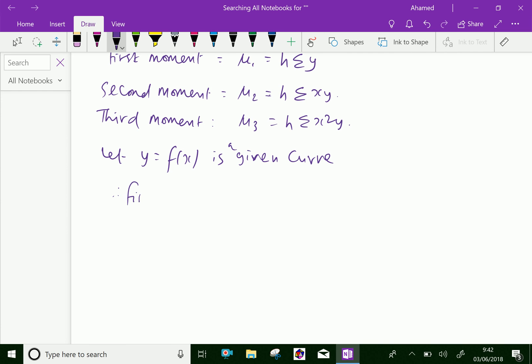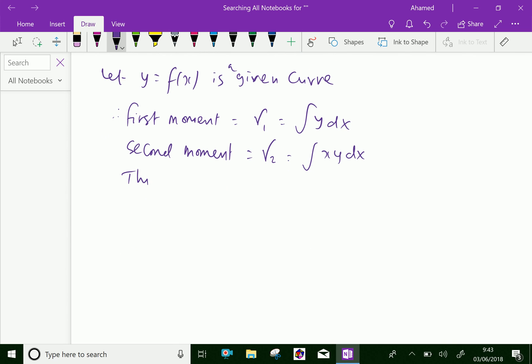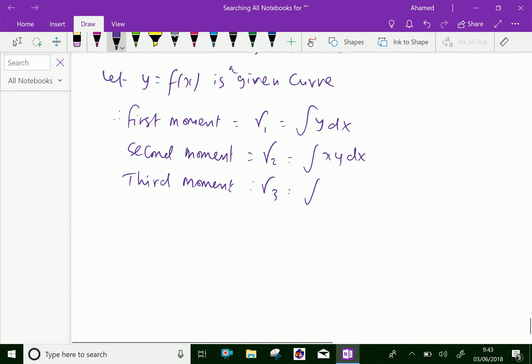The first moment γ₁ = ∫y dx, the second moment γ₂ = ∫xy dx, the third moment γ₃ = ∫x²y dx, and so on.